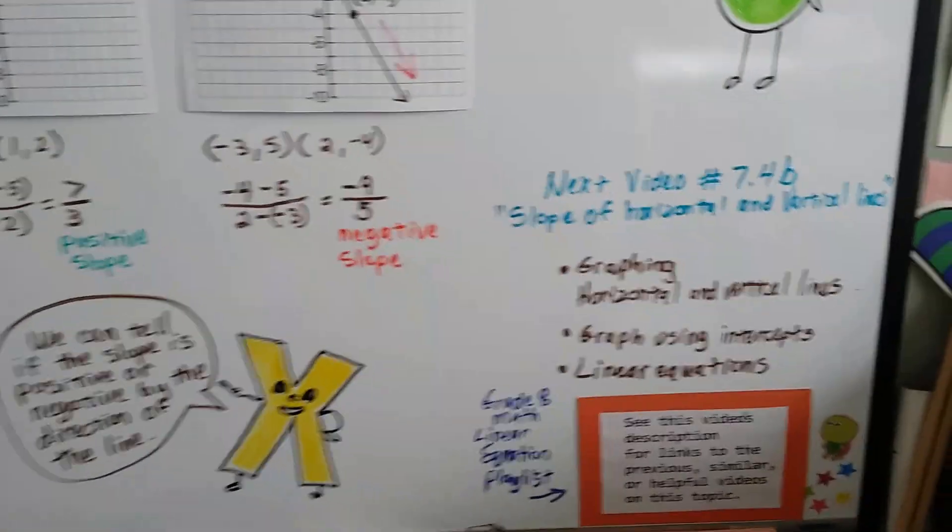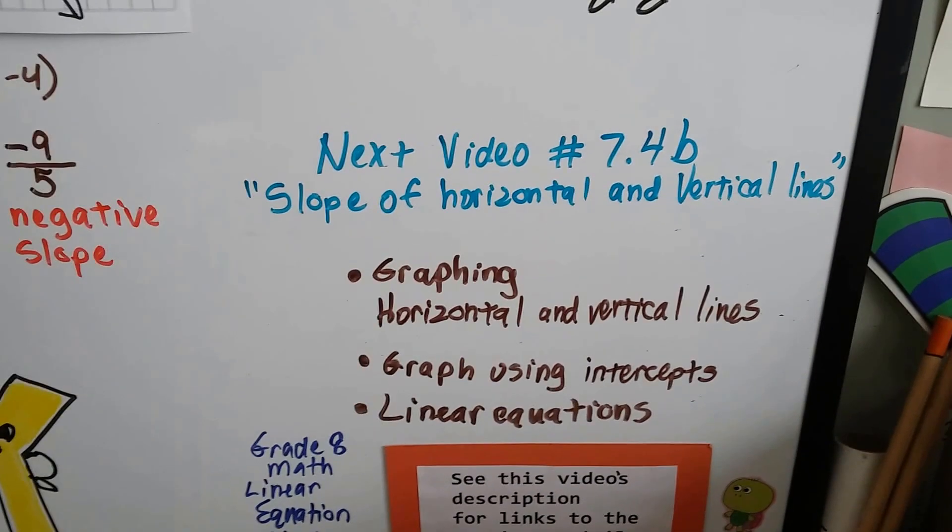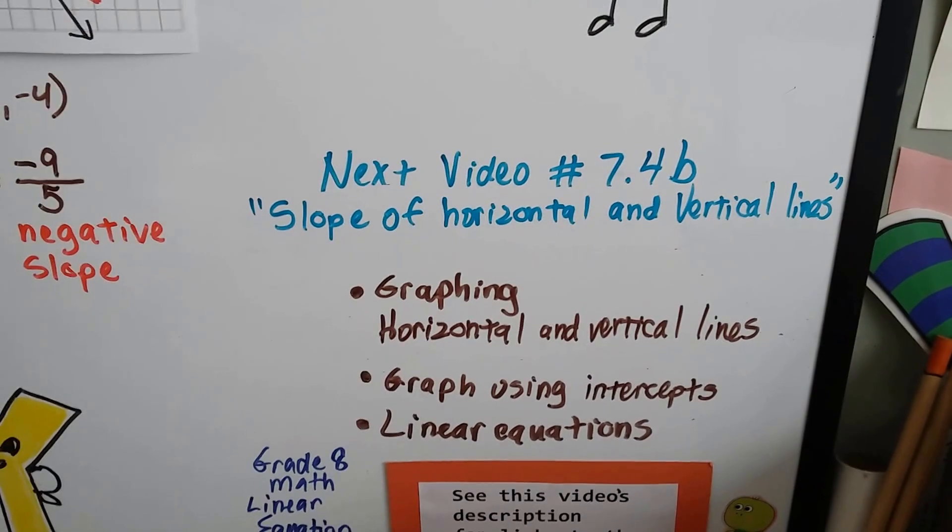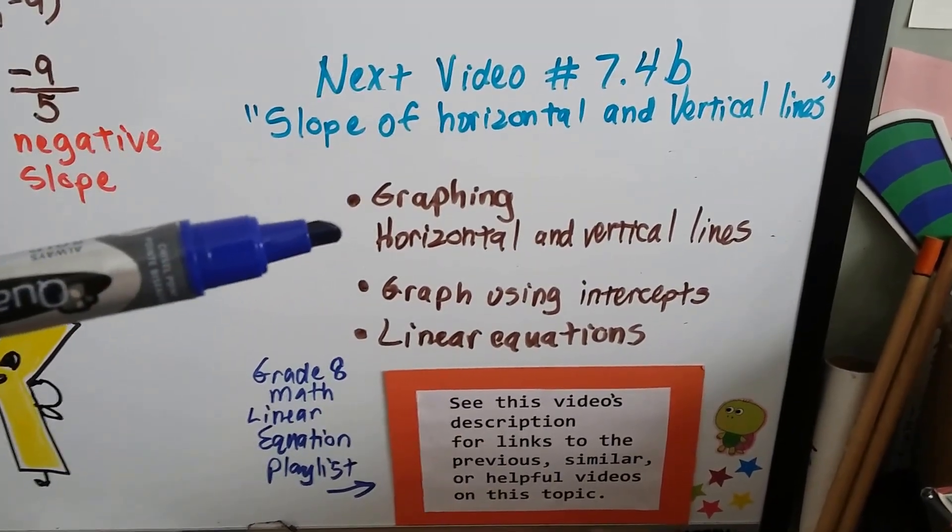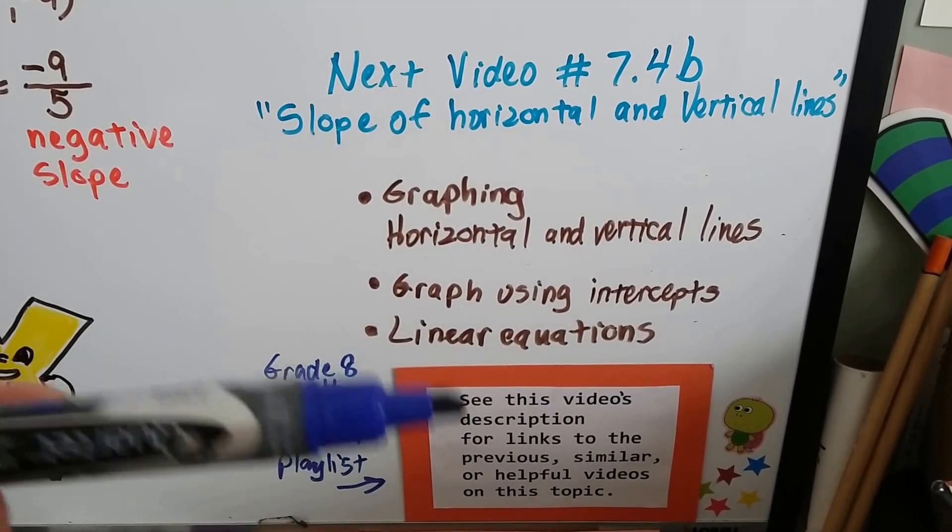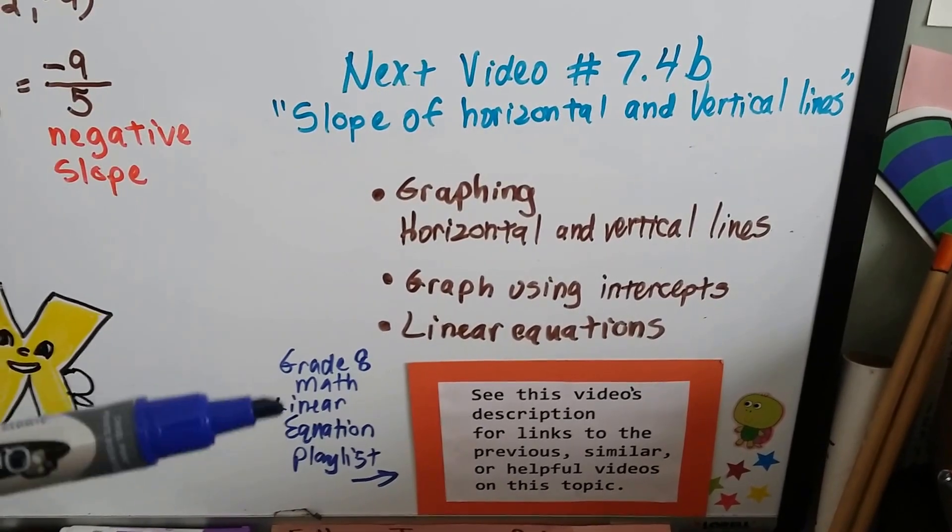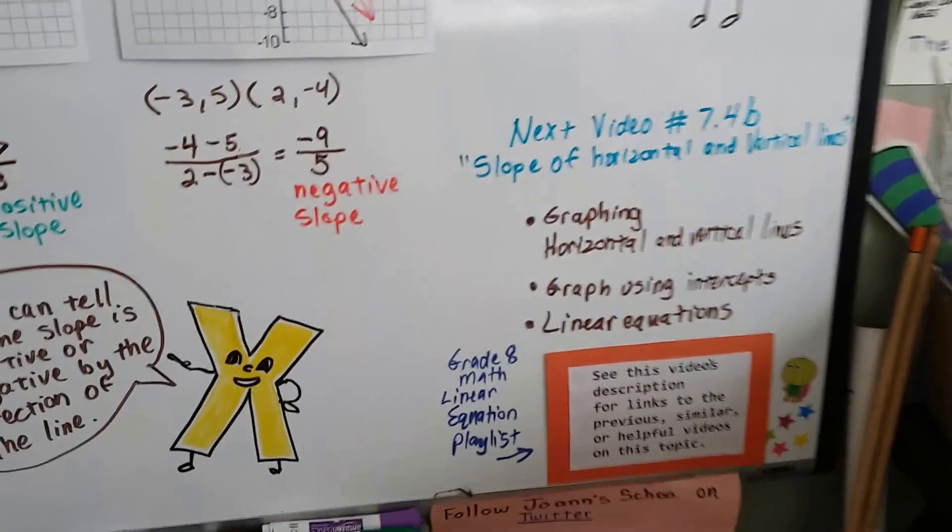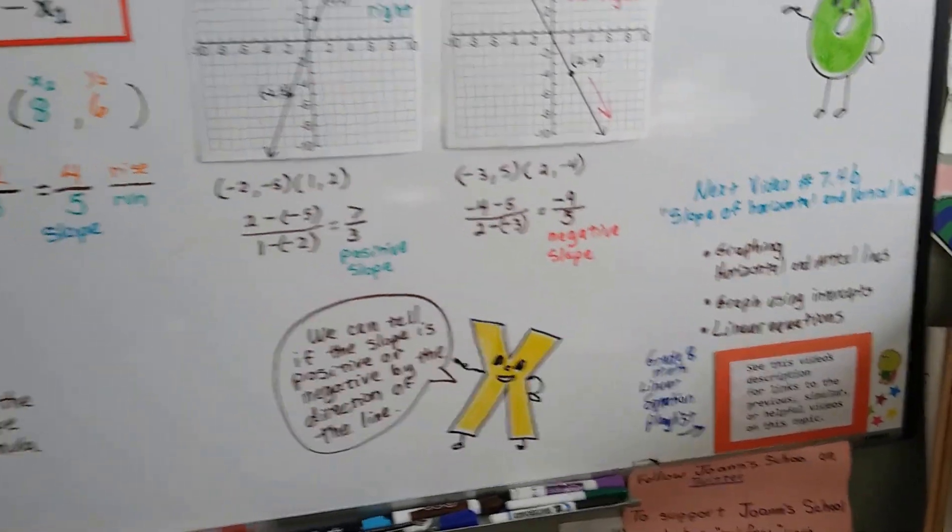So our next video, 7.4b, we're going to talk about the slope of horizontal and vertical lines. They don't even have a slope. They're going straight. They're going straight up or straight sideways. So what would their slope be? And if you want to go back to watching graphing horizontal and vertical lines or graph using intercepts or about linear equations, there'll be links in this video's description. And I'm also going to put a link to my grade 8 math linear equation playlist. That might be useful to you. Because there's lots of stuff in here that we haven't even covered yet. So if you want to move up, you can watch those.